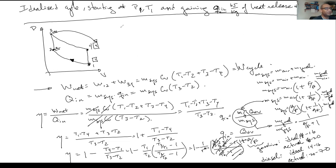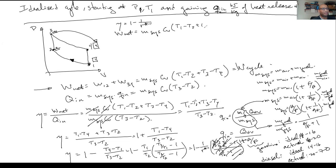So the efficiency of the cycle equals 1 minus 1 over R to the (k-1). You'd have similar derivations for all the other types of cycles we look at in this course — there are basically four different ones. The net work in the cycle equals mass * C_V * (T1 - T2 + T3 - T4), which also equals mass * Q_in * eta = mass * Q_in * (1 - 1/R^(k-1)).